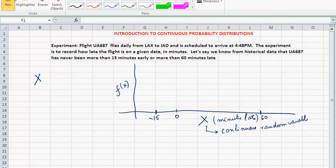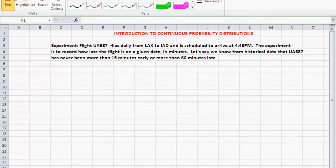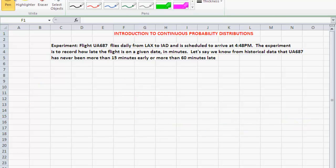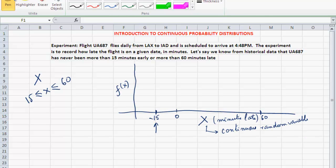Following our previous practice, let's say we use the letter X to represent the number of minutes that flight 687 is late on any particular day. I know that X will range from minus 15, if 15 minutes early means minus 15 minutes late, up to 60. So I know that minus 15 is less than or equal to X is less than or equal to 60. But unlike the previous experiment, the flight could be late anywhere between minus 15 to 60.